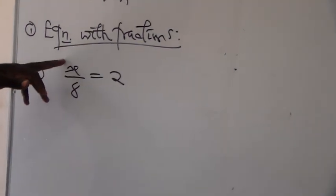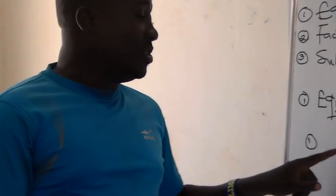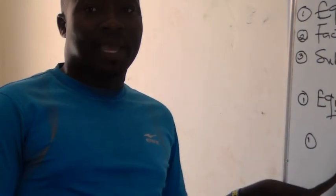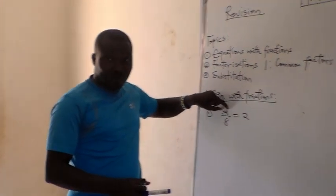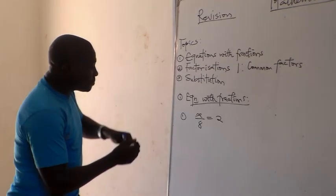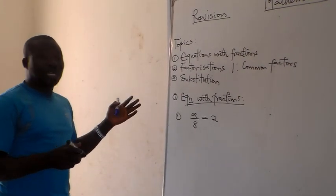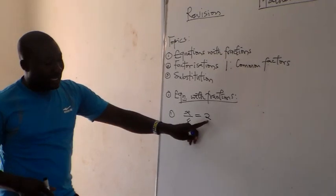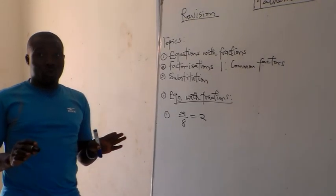Now x is a number — that's the use of a letter to represent a number. Whatever that number is, if that number is divided by 8, the result is equal to 2. So what would be that number? We can solve for it. On the left-hand side we have a fraction; on the right-hand side we have just an ordinary number.